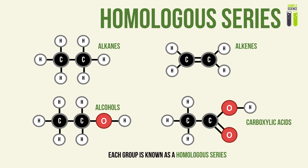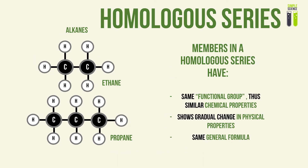In IGCSE organic chemistry, you will learn about four main groups of organic compounds: the alkanes family, the alkenes family, the alcohols family, and the carboxylic acids. Each of these groups is known as a homologous series — a homologous series is essentially a group of organic compounds. What's great is that each homologous series shares similar characteristics: they have the same functional group, they show a gradual change in physical properties, and they have the same general formula.